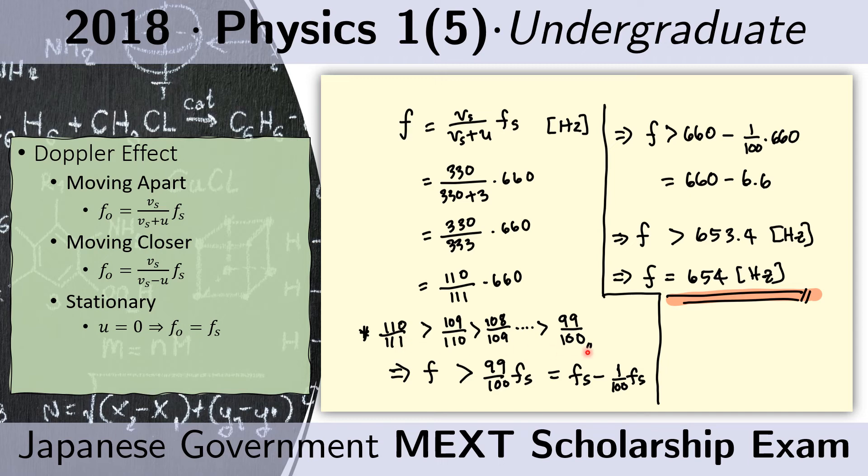I know this, so my F, which is equal to this, is actually greater than the F if I replace this fraction with 99 over 100. I like this because it's easy to compute, as 99 over 100 is the same as 1 minus 1 over 100, and I can compute 1 over 100 of F sub S easily.